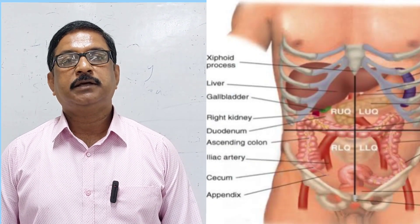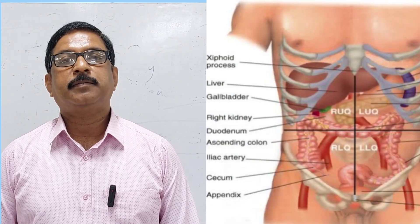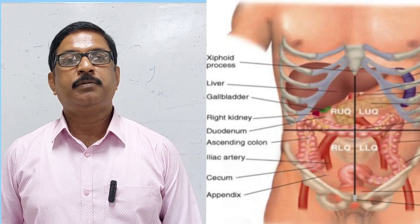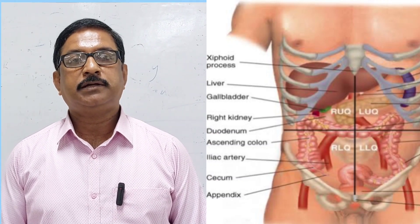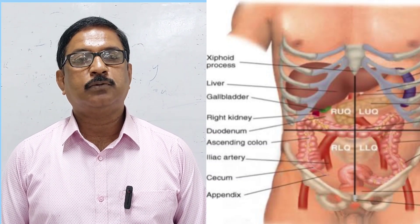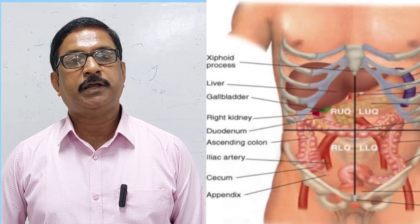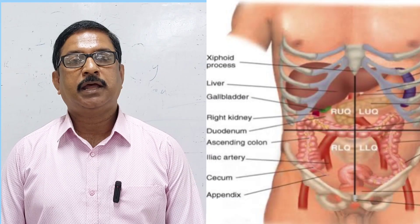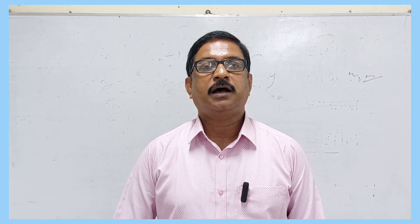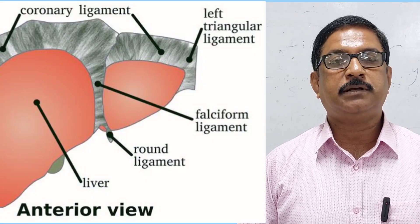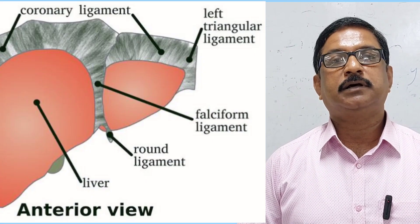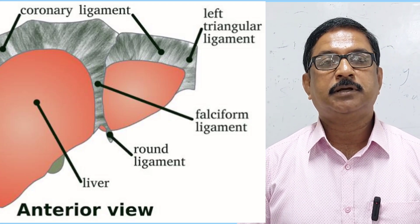The second factor is the surrounding abdominal viscera and the intra-abdominal pressure, which keeps the liver in position. The least important factors are the ligaments attached to the liver, such as the falciform ligament and others.